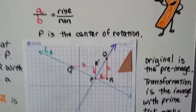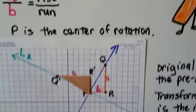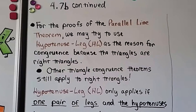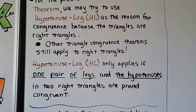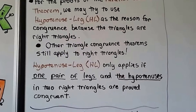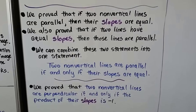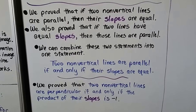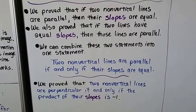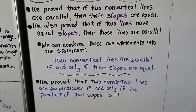The original triangle was the pre-image, and it rotated 90 degrees counterclockwise to form the image. For proofs of the parallel lines theorem, we may use hypotenuse-leg (HL) as a reason for congruence since the triangles are right triangles, though other triangle congruence theorems still apply. HL only applies when one pair of legs and the hypotenuses in two right triangles are proved congruent. We proved that two non-vertical lines are parallel if and only if their slopes are equal, and that two non-vertical lines are perpendicular if and only if the product of their slopes is negative 1.